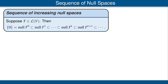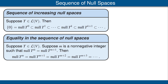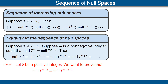Now let's erase that proof so that we have room to display and prove another result. Suppose T is an operator on V, and suppose that at some point in the chain of inclusions we have an equality — meaning the null space of T to the M is equal to the null space of T to the M plus 1 for some non-negative integer M. The conclusion is that we have equalities all the way after that as well.